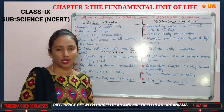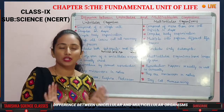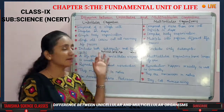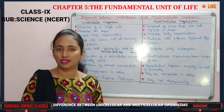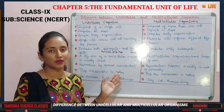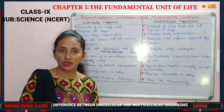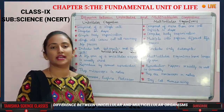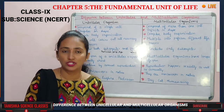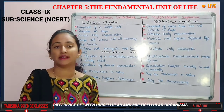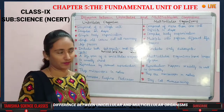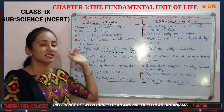The second difference is shape. Unicellular organisms are irregular in shape, while multicellular organisms have a regular, definite shape. For example, amoeba, paramecium, protozoa, and euglena are unicellular organisms — they have no particular shape. But multicellular organisms like humans, dogs, birds, and plants all have a particular, definite shape.